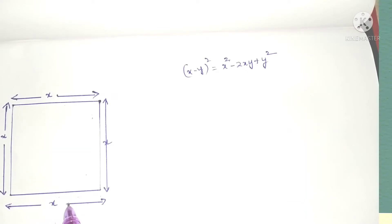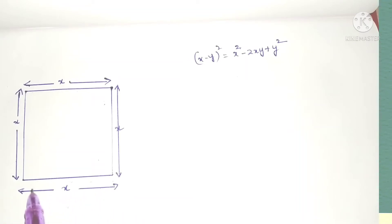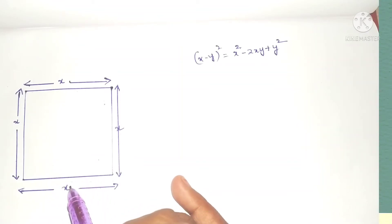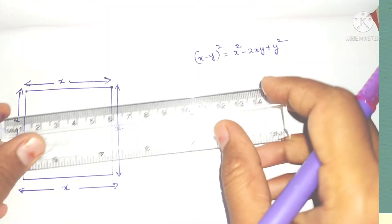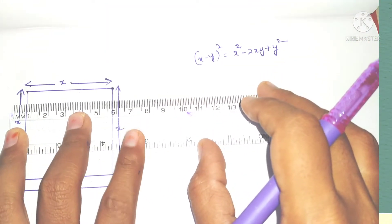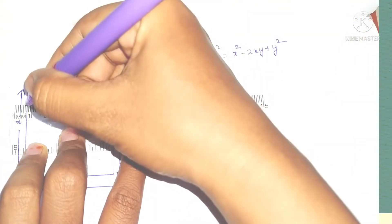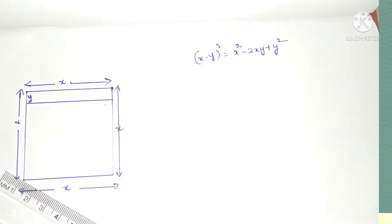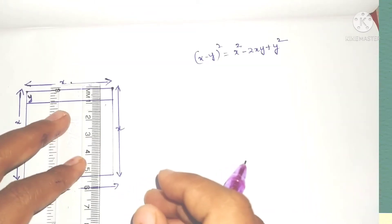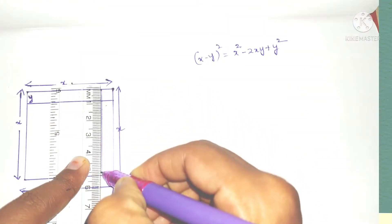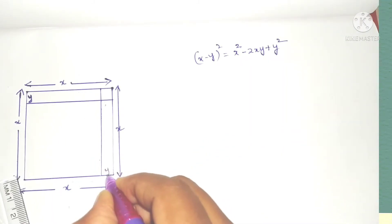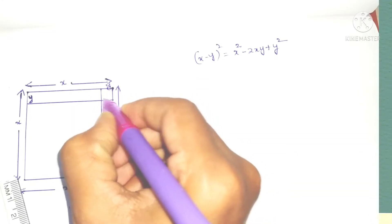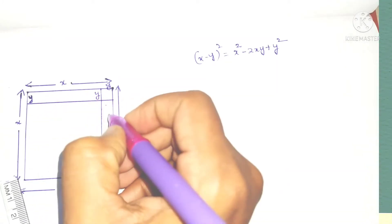Here I draw a square of side x units. Square means all four sides are equal, so this is x units. Now I am subtracting y units from this — I am taking away y units from this side, and from this side also I am subtracting y units. Opposite sides are equal, so y units are subtracted.